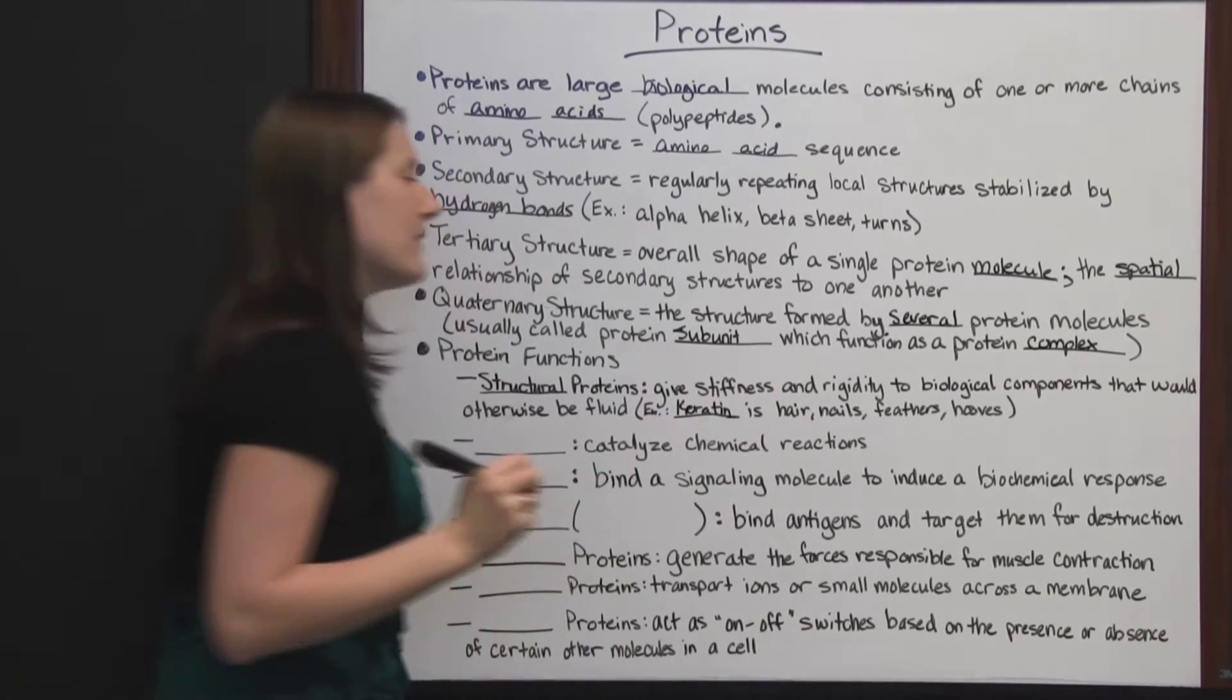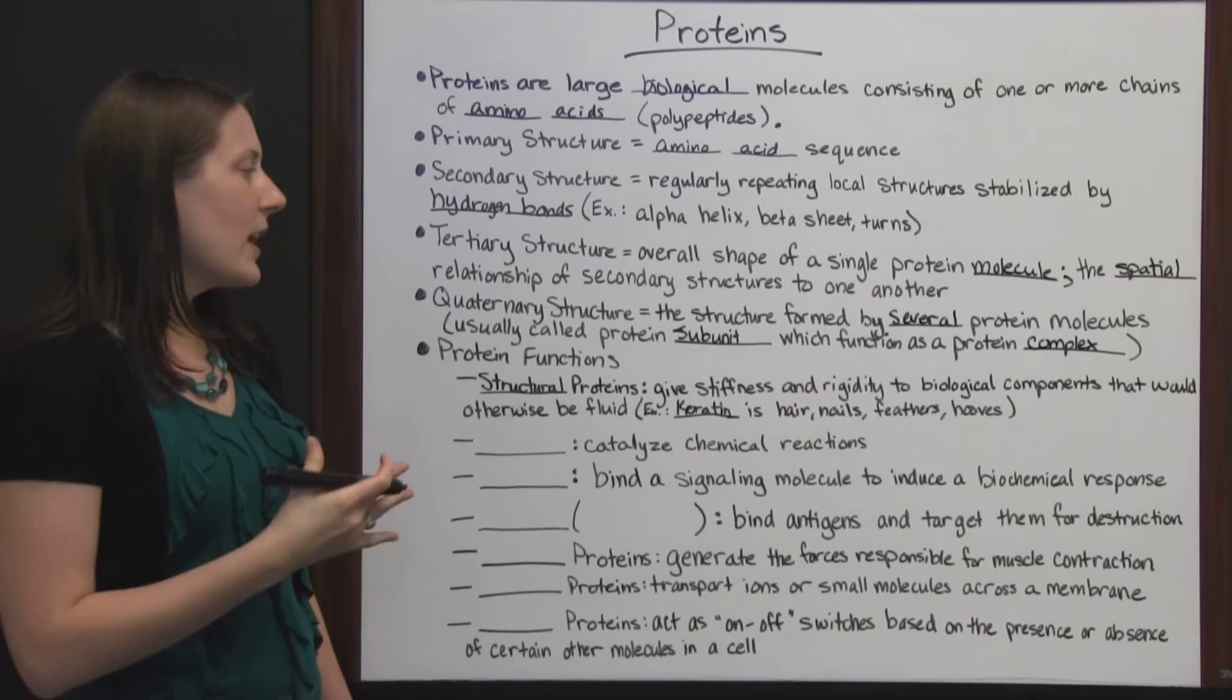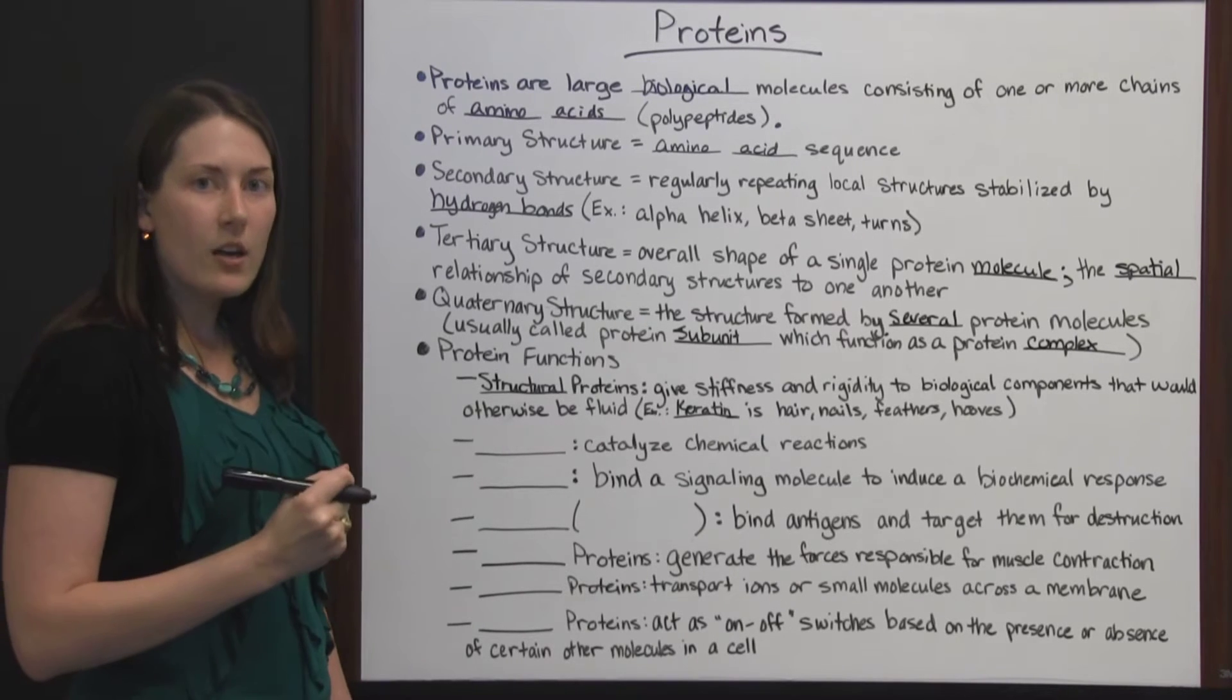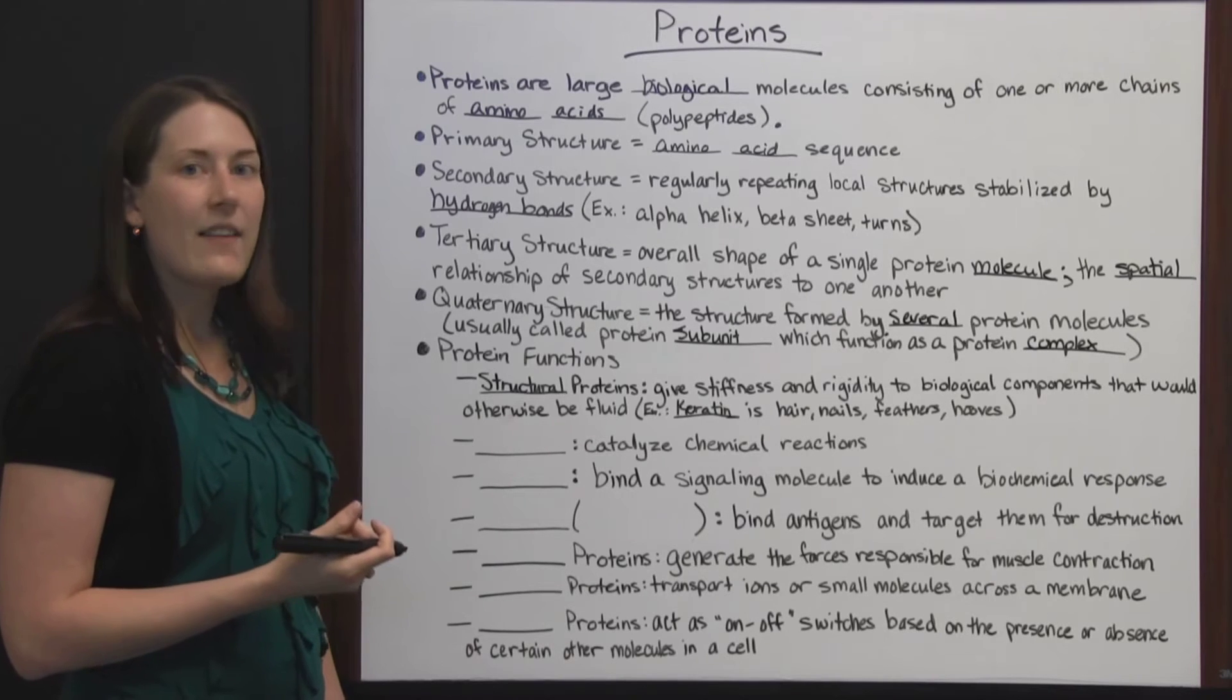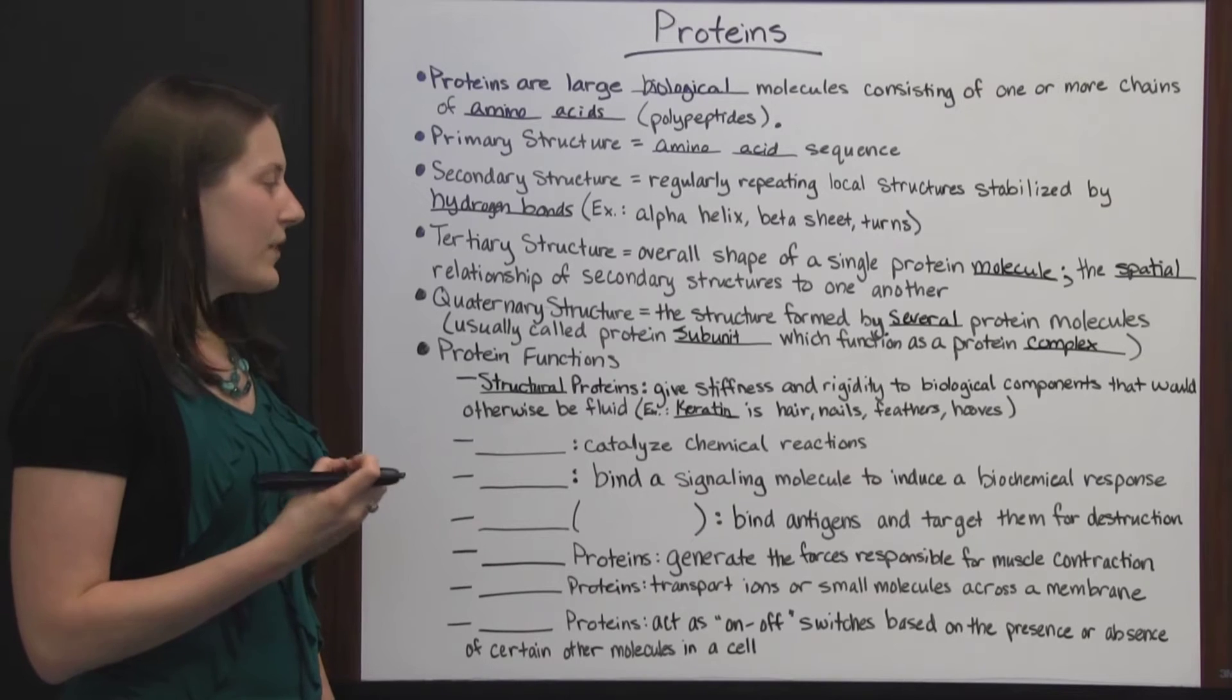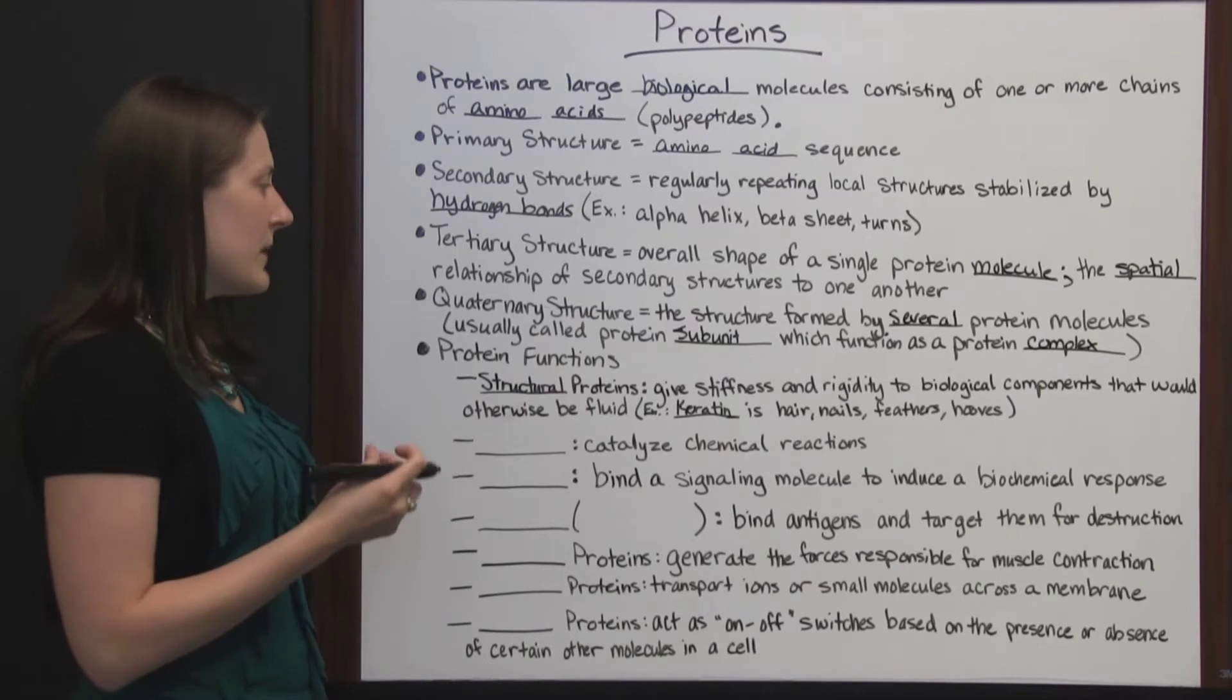Keratin is a protein found in our hair, nails, in birds' feathers, and animals' hooves. It gives them a hardness that they wouldn't otherwise have. It's not a part of your body like your skin or an organ. You can feel they're a lot harder than your skin would be.